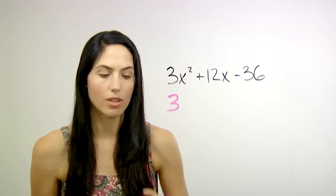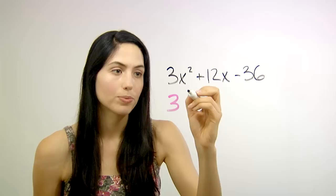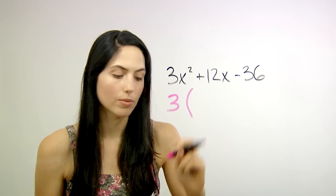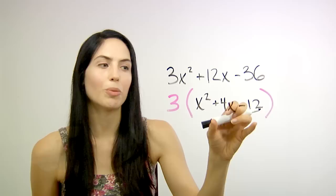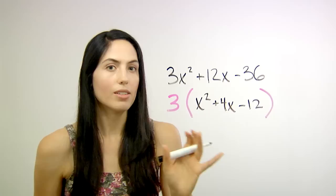You can pull out an overall 3 constant. And when you do, you're left with just x squared plus 4x minus 12, which you'll remember is the same as the last problem we just did. So this is actually not a tougher factoring problem. This is the same as the last problem. It was just disguised by this overall 3 constant.